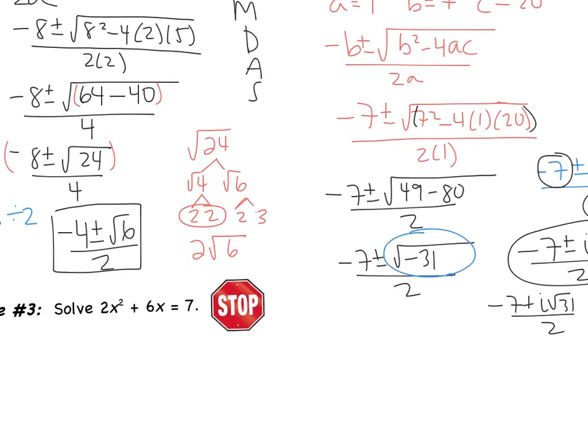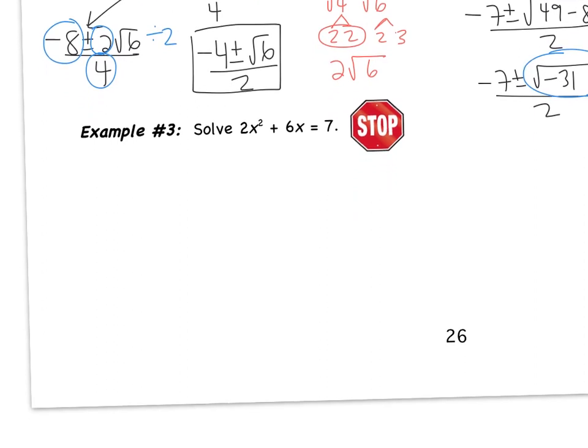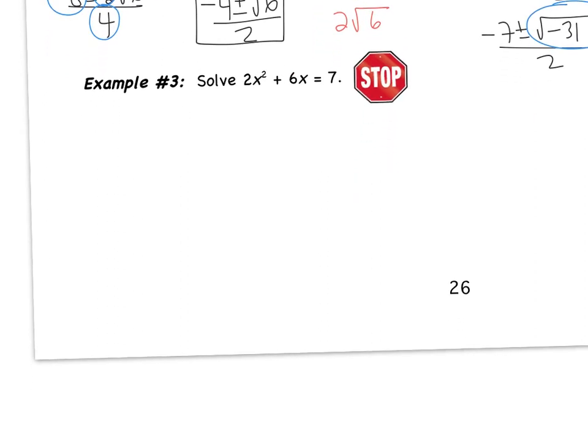Here's example 3 — this is the one you are going to try. Make sure you start by moving everything to one side and having it set equal to 0 before you start. Pause the video, try it on your own, and come back when you are finished.